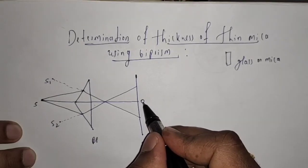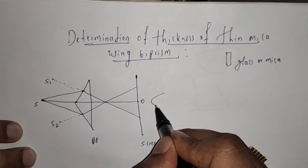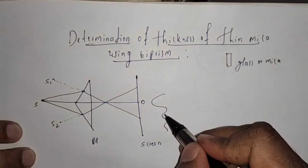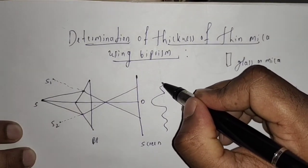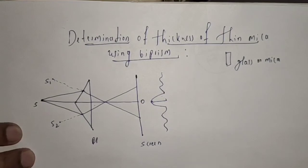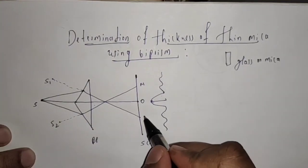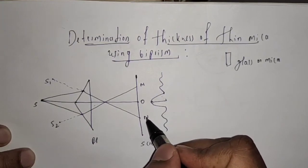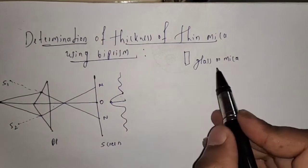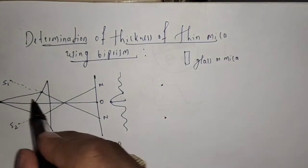The center point is denoted by O, and a diffraction pattern is observed. At the center, a central bright fringe is formed, then a dark one, then a slightly brighter fringe, and so on. This central bright fringe is formed at point O. If we denote the extreme points M and N, then M and N are divided equally by point O.